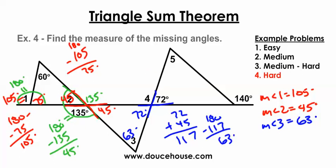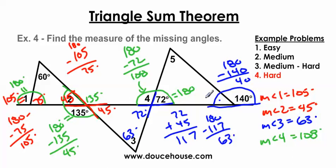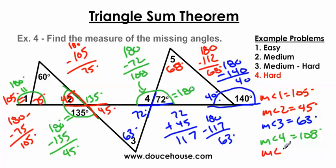Now I need to find angle 4. We have another linear pair — those have to equal 180 degrees. 180 minus 72 is 108 degrees. So the measure of angle 4 is 108 degrees. For angle 5, I need two of the three angles in that triangle. Using a linear pair, 180 minus 140 is 40 degrees. So angle 5 plus 72 plus 40 must equal 180 degrees. 72 and 40 is 112, and 180 minus 112 is 68 degrees. The measure of angle 5 is 68 degrees.